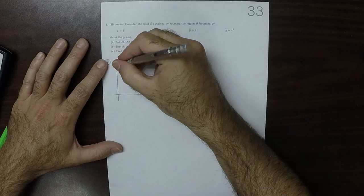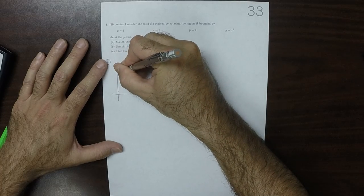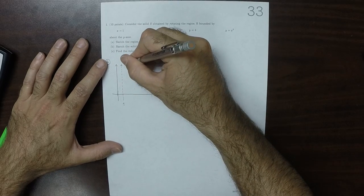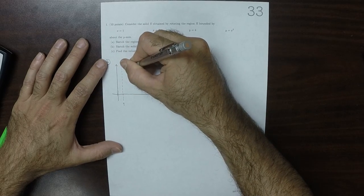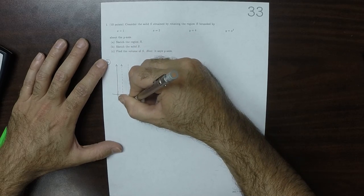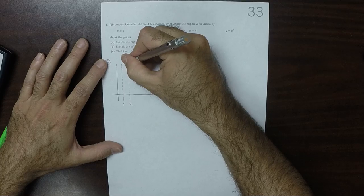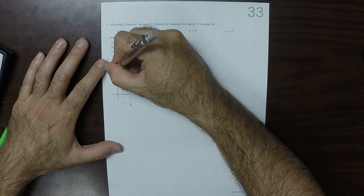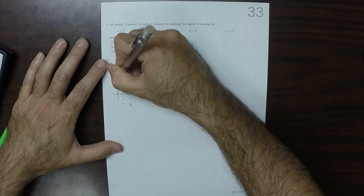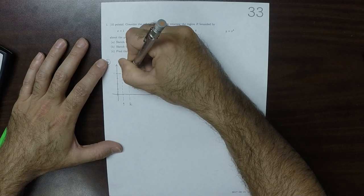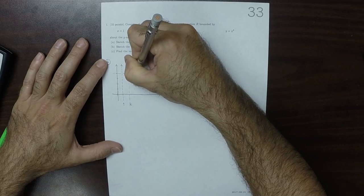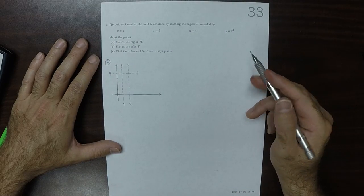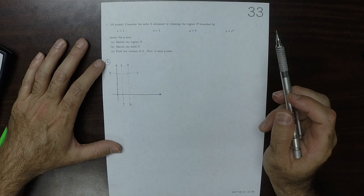So we've got X is 1 and X is 2. Y is 4. Okay. And we also have the parabola Y is X squared.